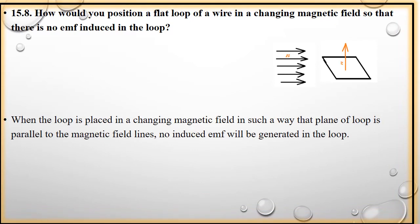Next question hai: How would you position a flat loop of wire in a changing magnetic field so that there is no EMF induced in the loop? Yaani, wo keh rahe hain ki ek changing magnetic field mein hum apni flat loop ko kis position mein rakhenge ki us mein koi EMF induced na ho.